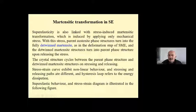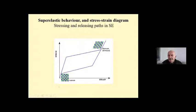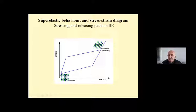It is important that the stress-strain curve exhibits non-linear behavior, and the stressing and releasing paths are different — the hysteresis loop refers to the energy dissipation. This is the stressing and releasing path in superelasticity. With stressing, the ordered parent phase structures turn into the detwinned martensitic structures by means of stress-induced martensitic transformation. As you can see, this hysteresis is non-linear and this loop refers to the energy dissipation.